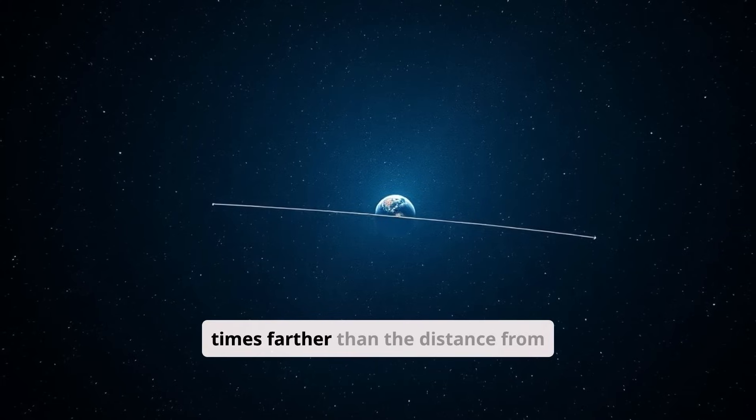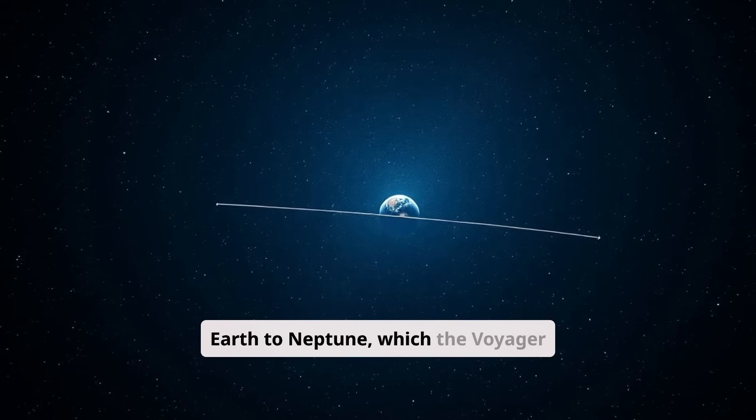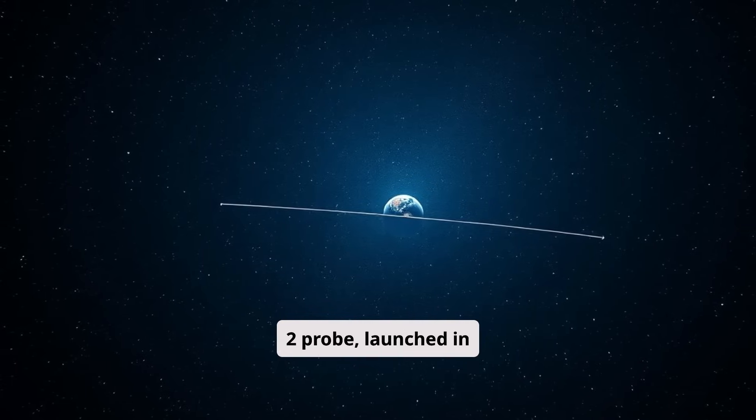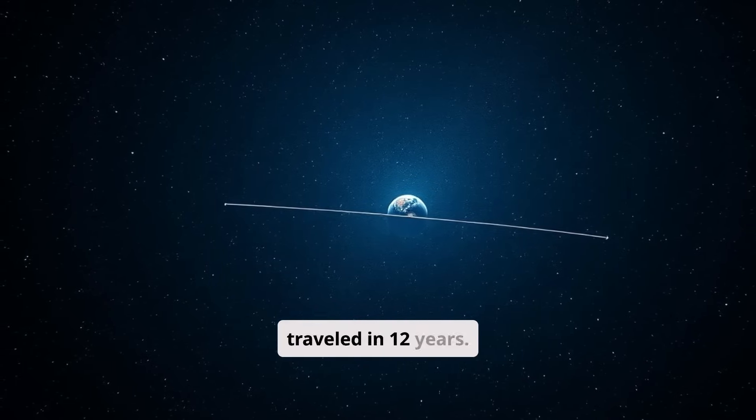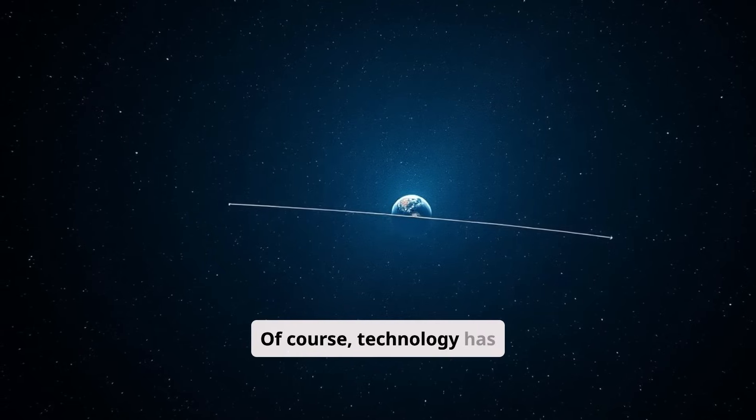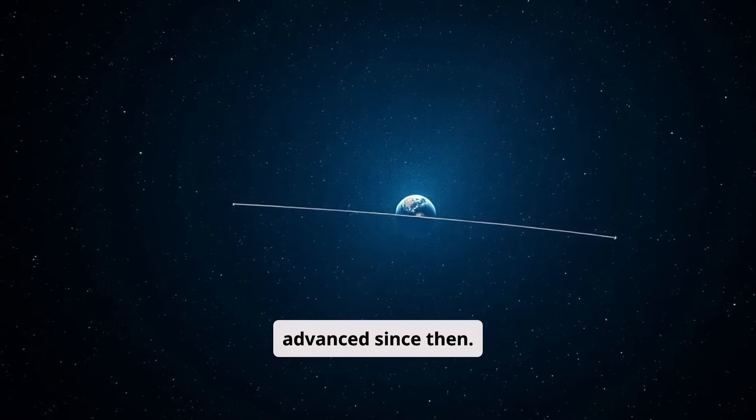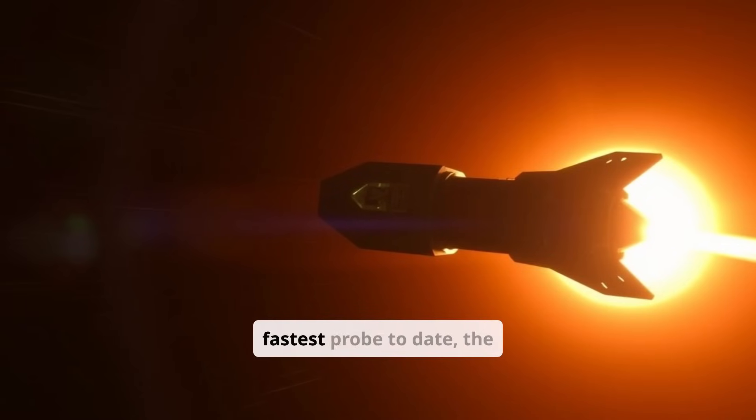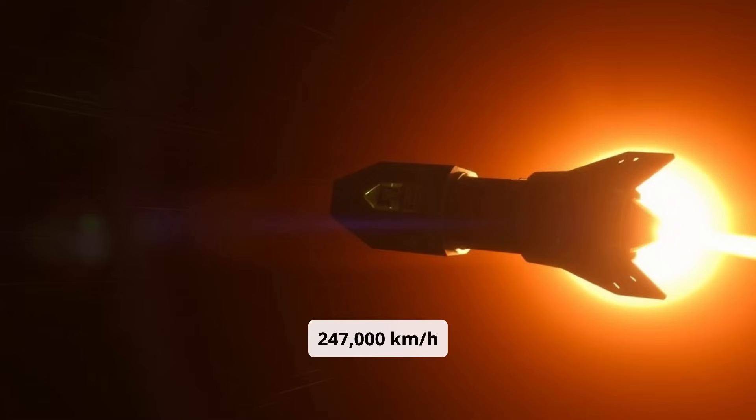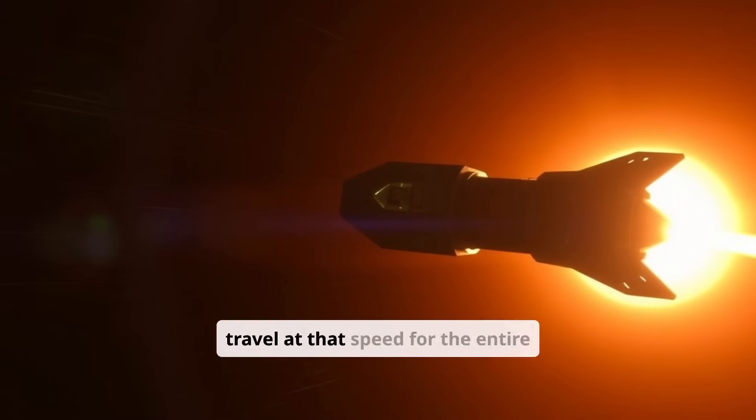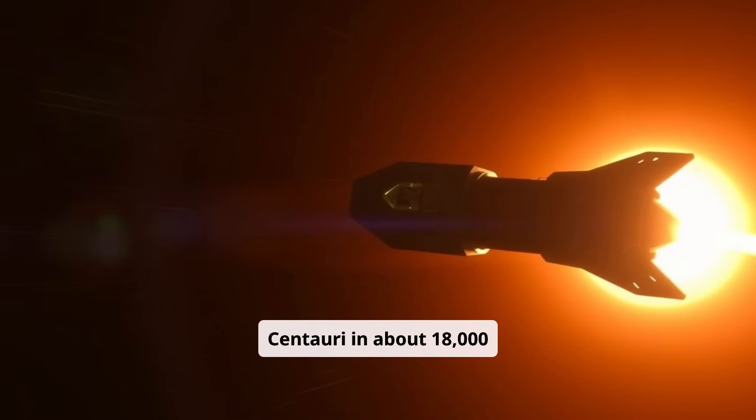Voyager 2 probe, launched in 1977, traveled to Neptune in 12 years. Of course, technology has advanced since then. However, if we take the fastest probe to date, the Parker Solar Probe, which in 2018 reached a speed of 247,000 kilometers per hour on its way to the Sun, and assume it would travel at that speed for the entire journey, it would reach Proxima Centauri in about 18,000 years.